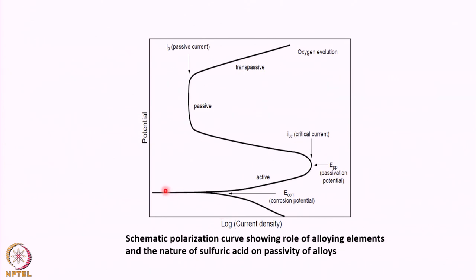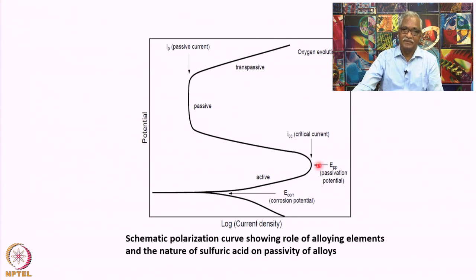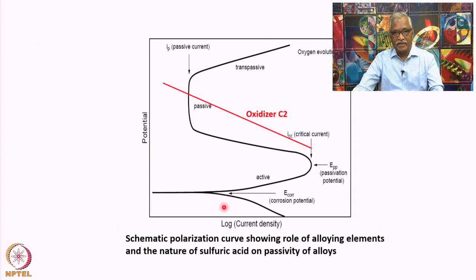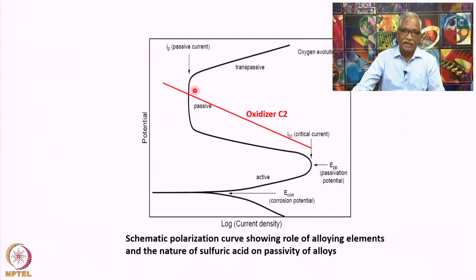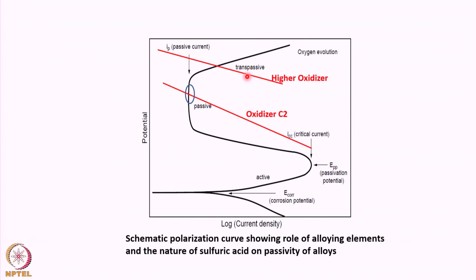The passivation potential and the critical current density are very important. Unless the system crosses the critical current density, the metal cannot achieve passivity. If the cathodic reaction has substantially increased kinetics, it is possible for the metal to reach a corrosion potential lying in the passive region, exhibiting a corrosion current density equivalent to the passive current density. If the oxidizer concentration increases, the mixed potential will lie in the transpassive region and corrosion rate increases.